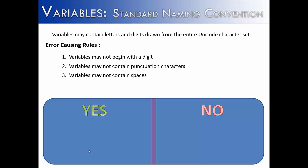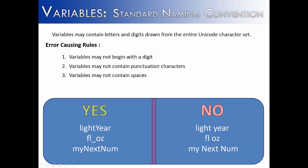The next rule is Java variables cannot contain spaces. So we have light year, fluid ounce, and my next num — all of these contain a space and would be illegal. Instead of saying light year with a space, you could say lightYear and capitalize the Y. Also, if you want to separate fluid ounce, you could add an underscore character to make it legitimate. And myNextNum — I just capitalized each N. This is a good way to capitalize each word to separate them since spaces are not allowed.